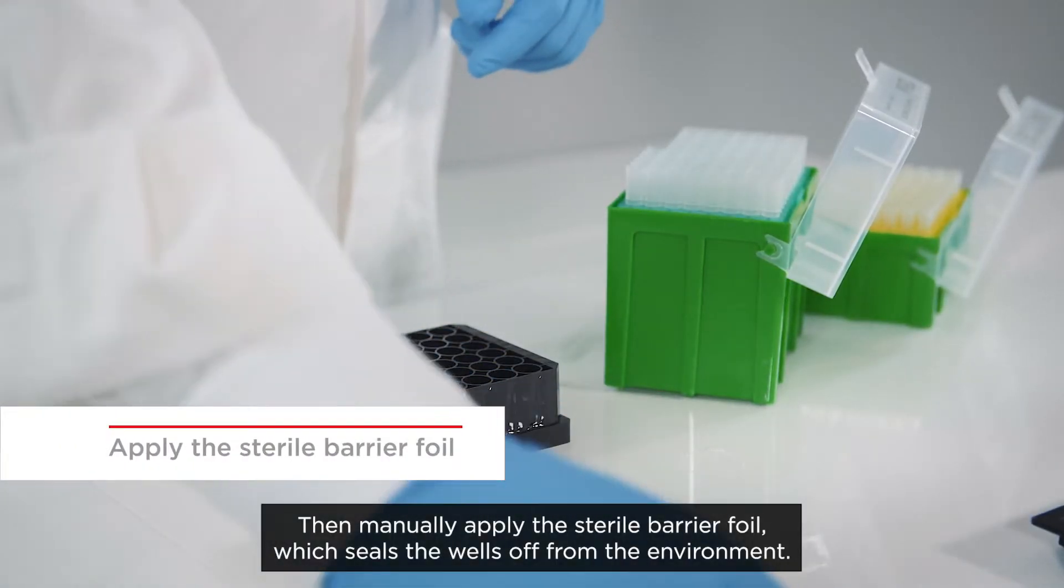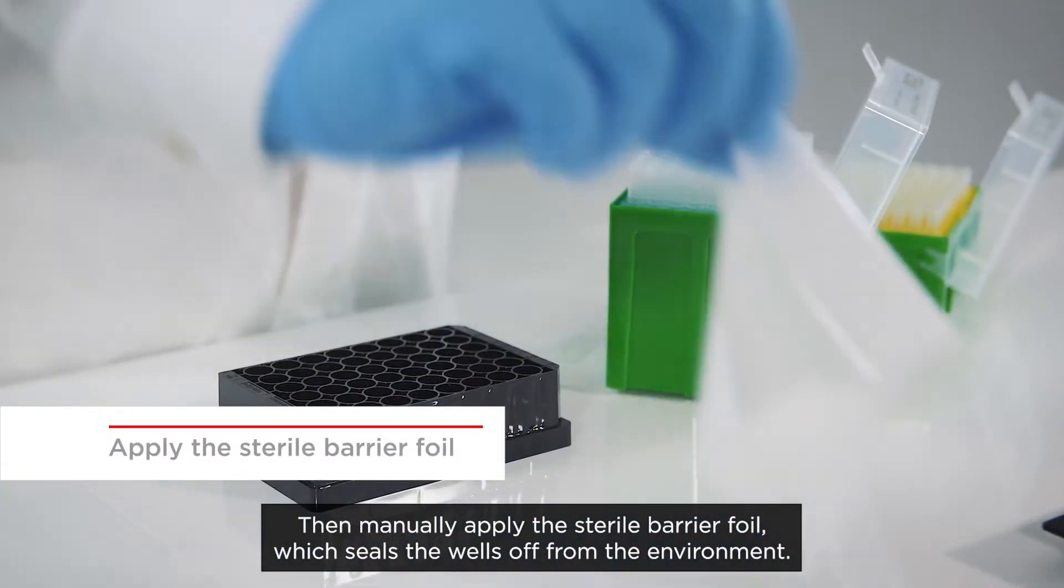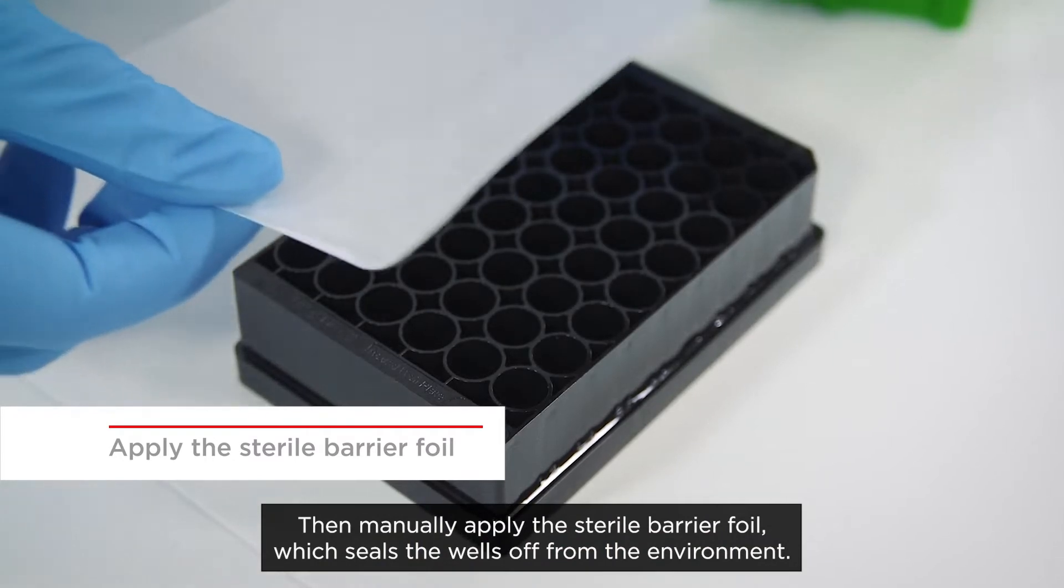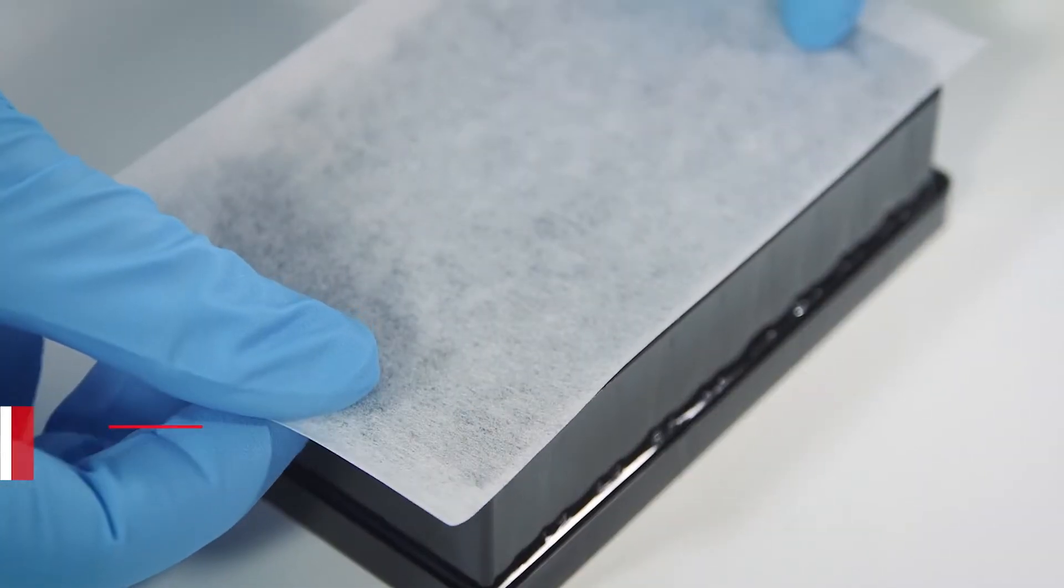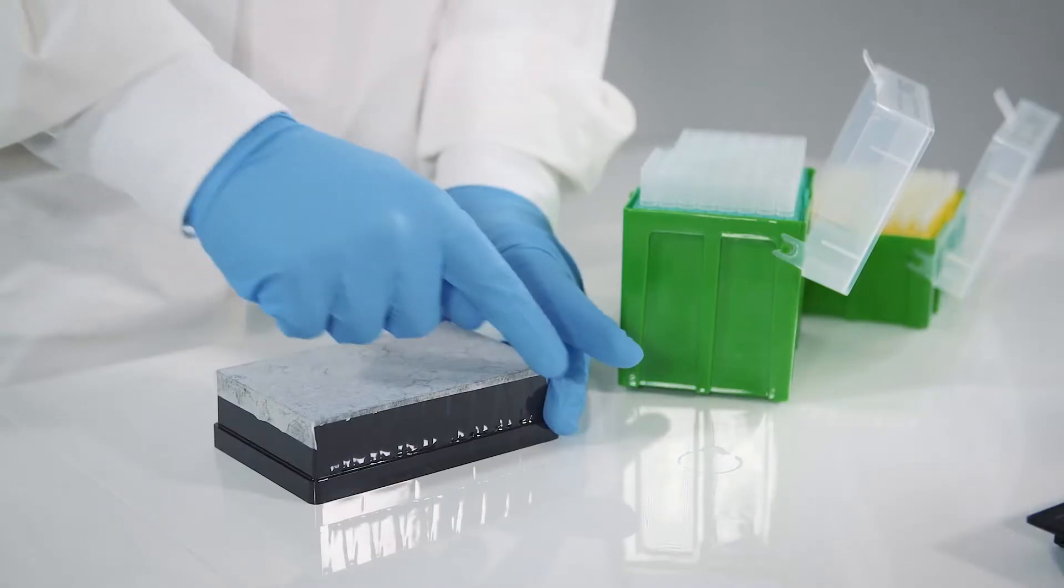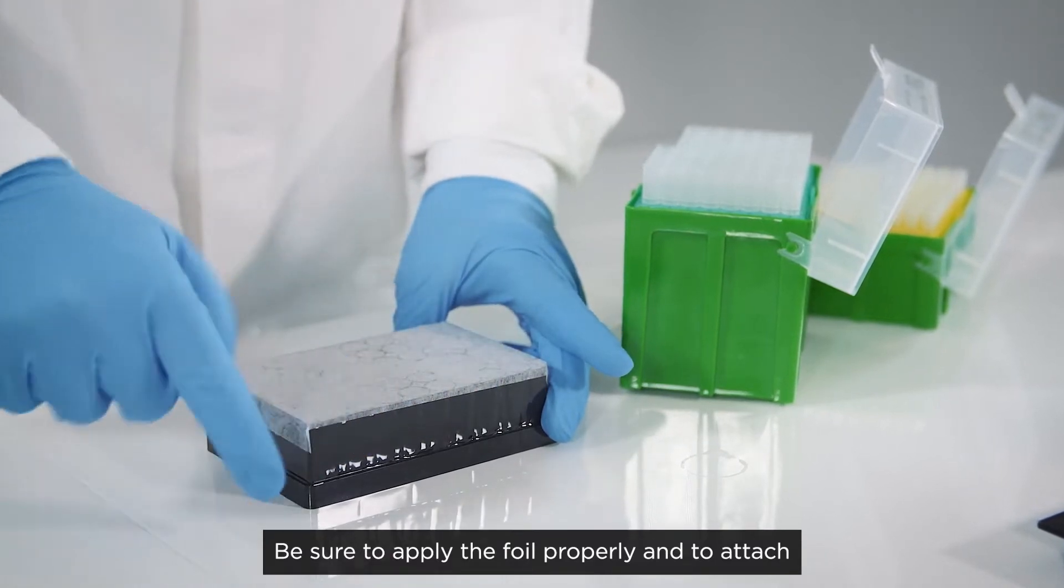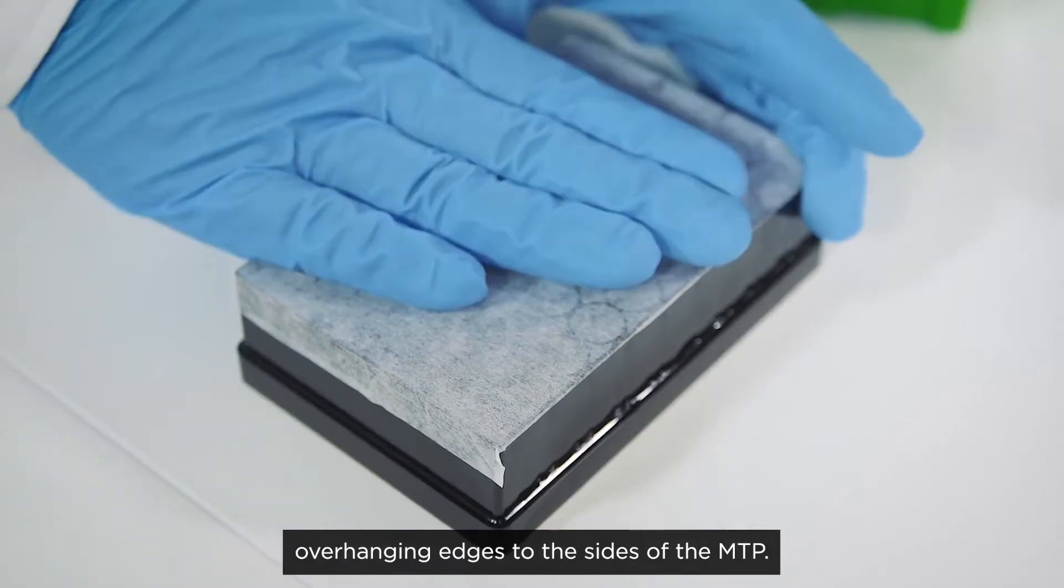Then manually apply the sterile barrier foil, which seals the wells off from the environment. Be sure to apply the foil properly and to attach overhanging edges to the sides of the MTP.